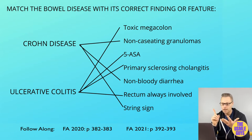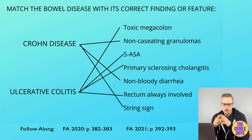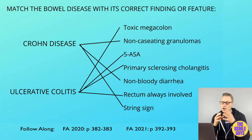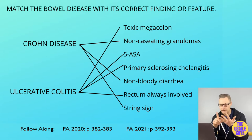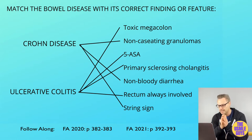Both conditions are associated with malabsorption, malnutrition, and an increased risk of colorectal cancer. Crohn's disease is more associated with fistulas and strictures, while ulcerative colitis is more associated with fulminant colitis, toxic megacolon, and perforation.